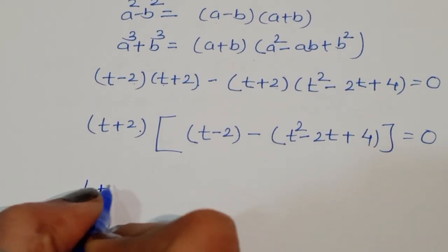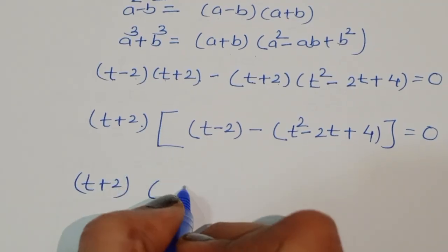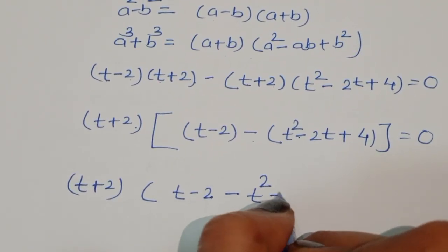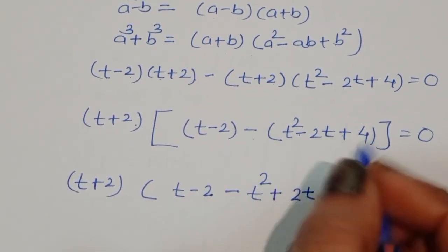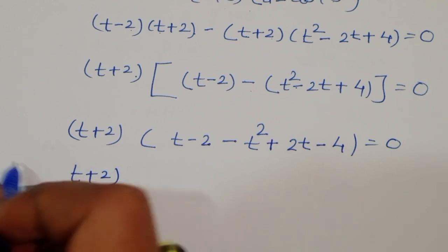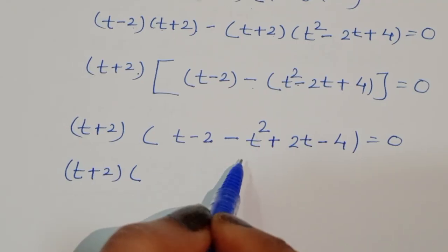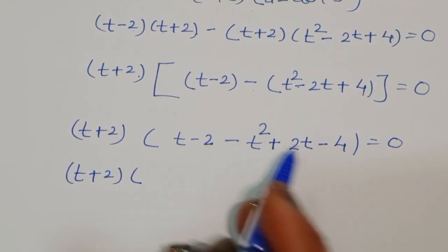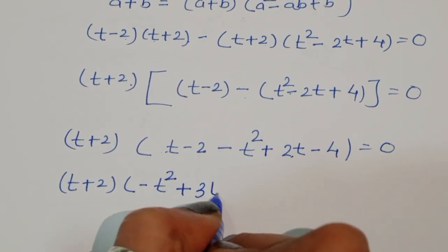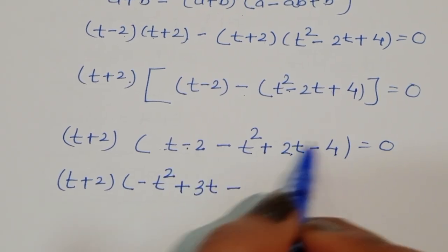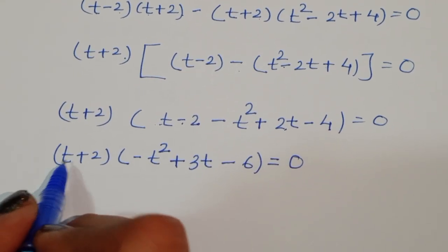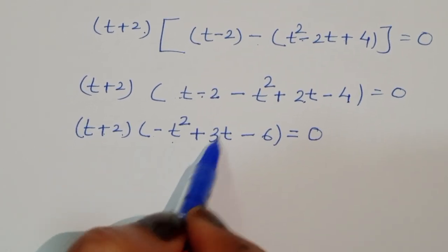We take (t plus 2) as a common factor. Opening the bracket: (t plus 2) times [t minus 2 minus t squared plus 2t minus 4] is equal to 0. Simplifying the bracket gives (t plus 2)(minus t squared plus 3t minus 6) equals 0. So we get two equations: t plus 2 equals 0, and minus t squared plus 3t minus 6 equals 0.